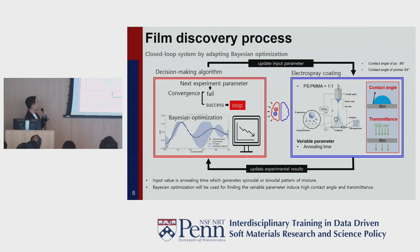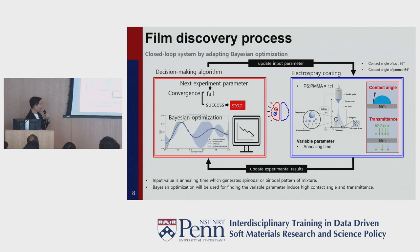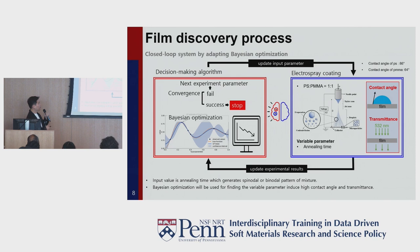Now, I will show the toy problem for the electrospray deposition method. The toy problem's target is to optimize the concentration and annealing time, then maximize the film's contact angle and transmittance. Using the electrospray deposition method, we spray PSN-PMMA polymer solution on the surface. After the annealing process, we measure the contact angle and transmittance of the film. Bayesian optimization then determines the next experimental parameter, and this process is repeated until convergence. Since we manually measure the contact angle and transmittance, we call it semi-autonomous experimentation.